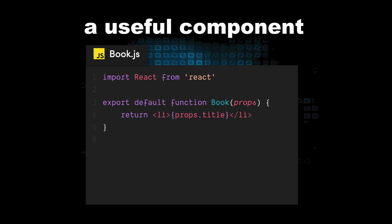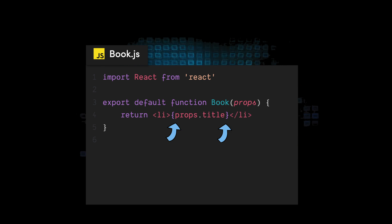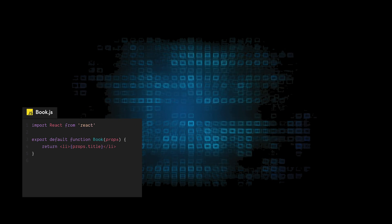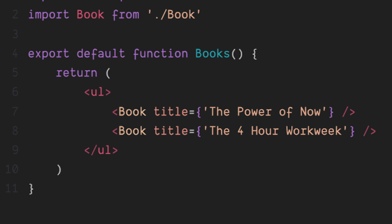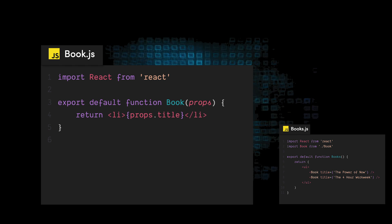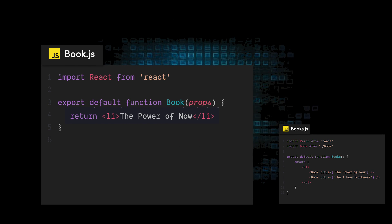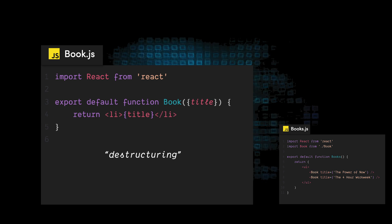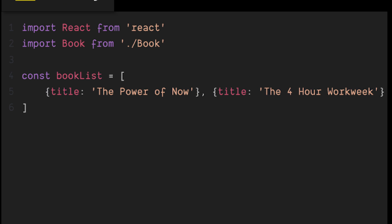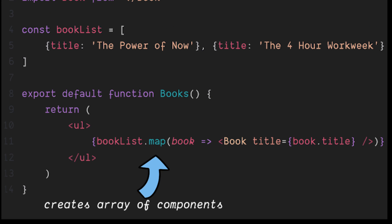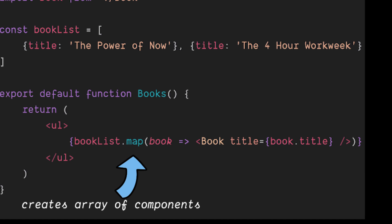Here's a component called Book that we might actually write. We always have to export our component from its file. The first argument is always props, which allows us to receive data from components above. We activate JS with a curly bracket so we can render title on the page. In a parent component, we use that child component Book twice — notice how we import it and then pass in title as a prop. In our child component, props.title gets replaced with what we passed in. Using object destructuring is also common to pull props out from the argument. Usually we'll have some JSON, or in this case an array of books that we want to render on the page, and we'll use the JavaScript array method map to return a component for each item in the array. This is a pattern you'll see a lot in React.